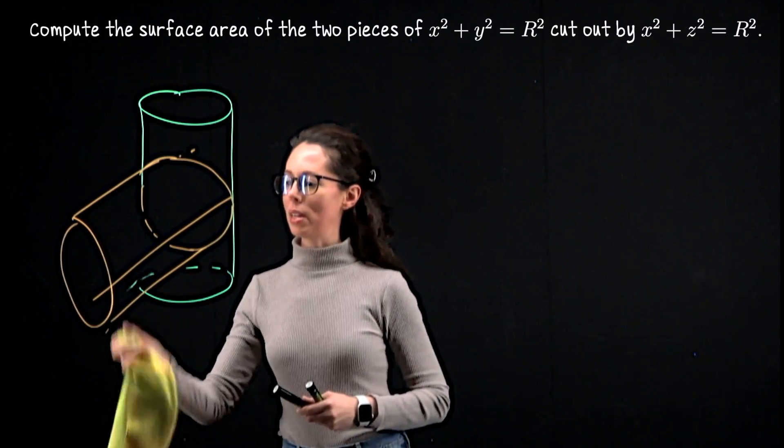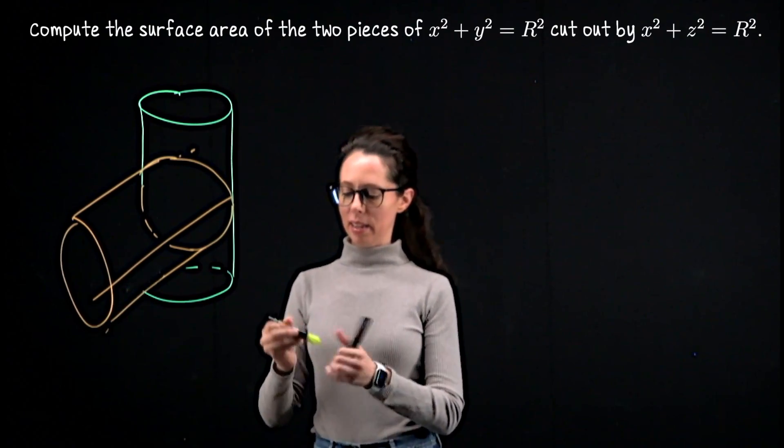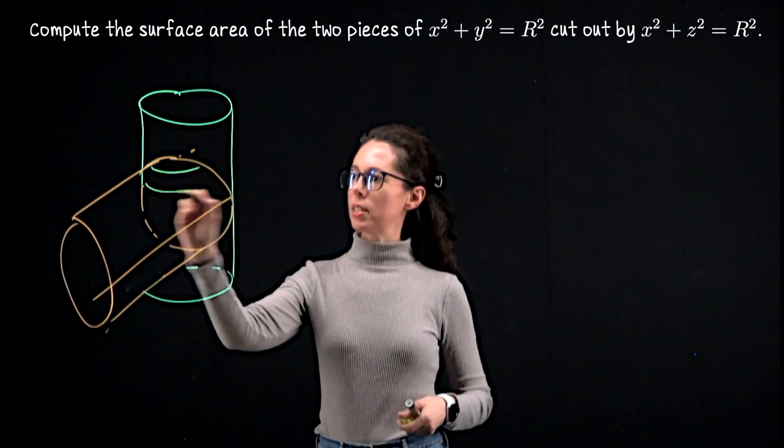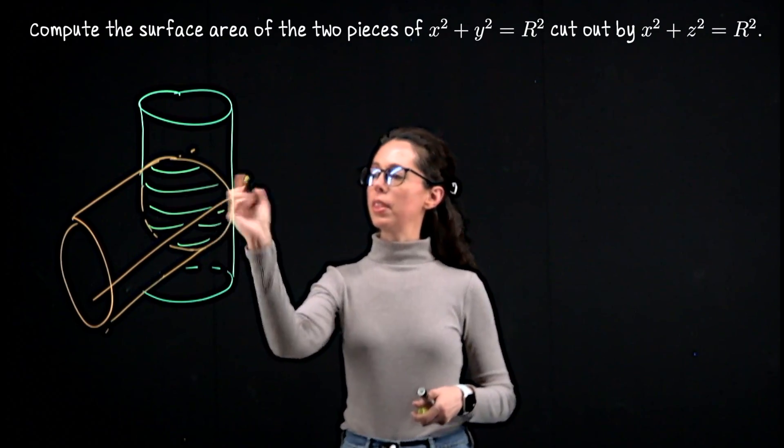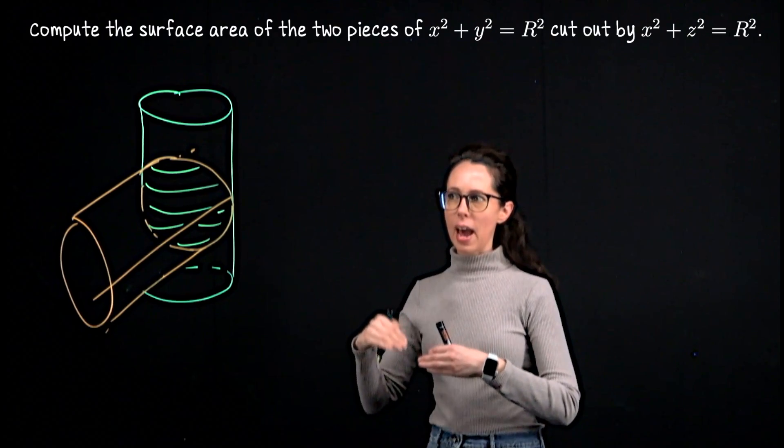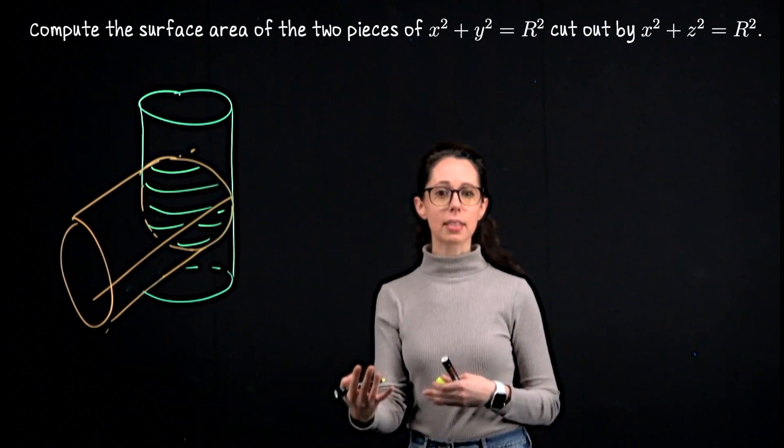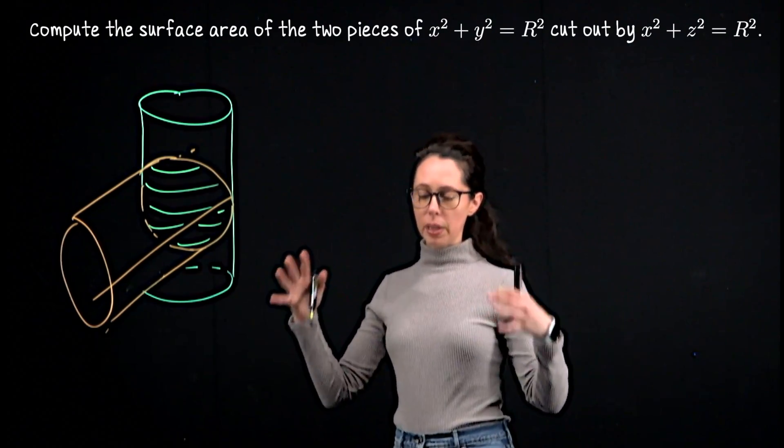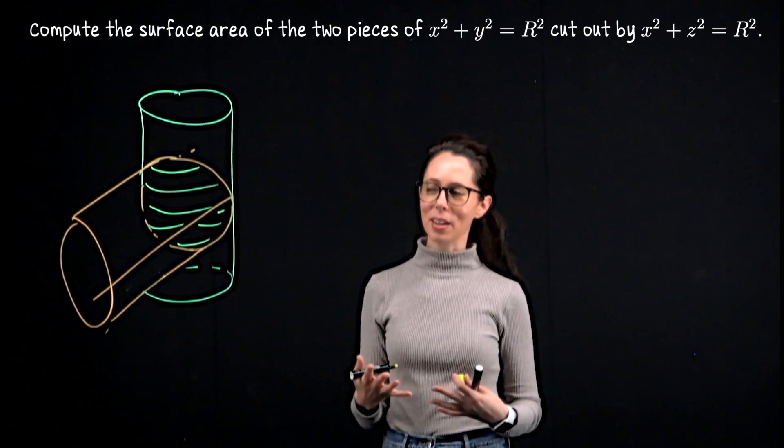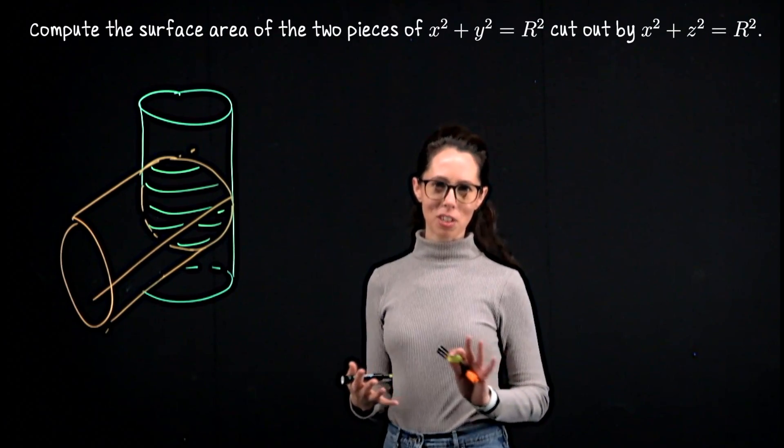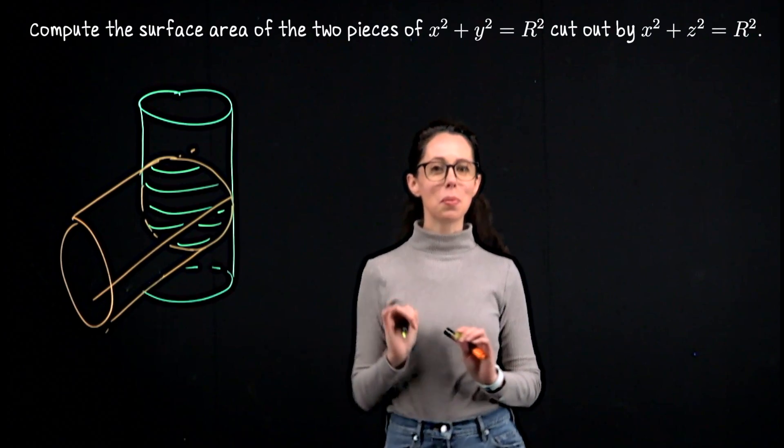What we want to do is figure out the surface area. That's going to be the area of this region that I sketched closest to me and add to that the same area on the opposite side. So if you picture these two cylinders intersecting, in fact, I'll put up a much better picture in just a moment in case this one doesn't really communicate what's happening.